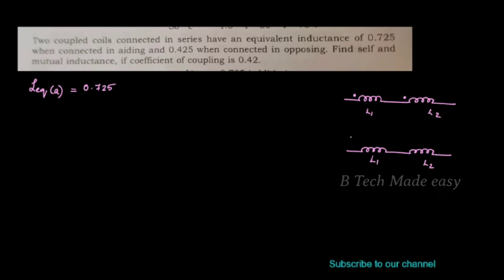We have L1 and L2. This is the starting condition and end condition for series opposing. The L equivalent opposing is equal to 0.425 Henry.